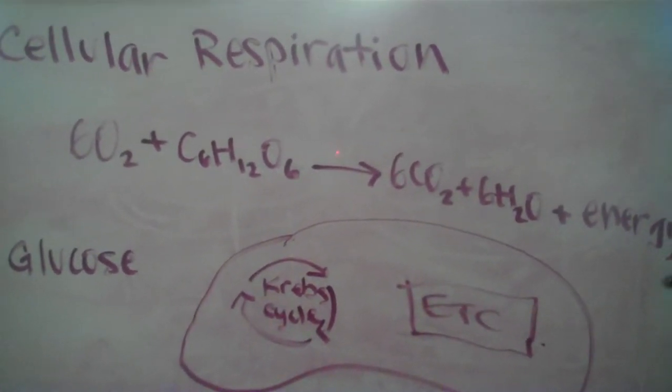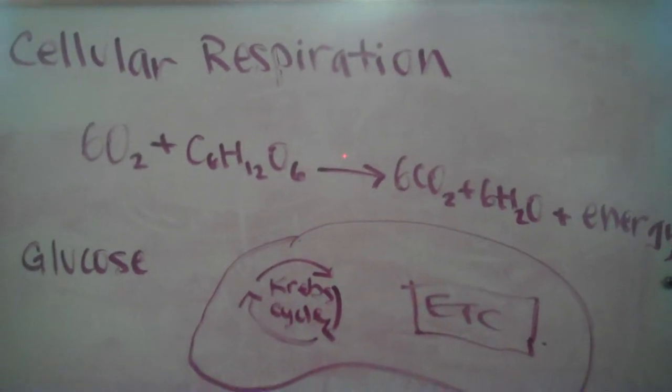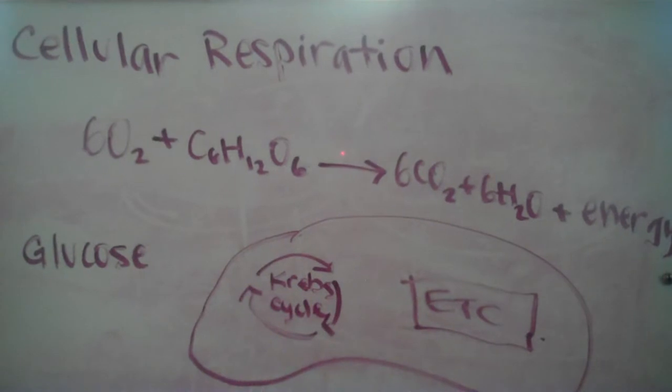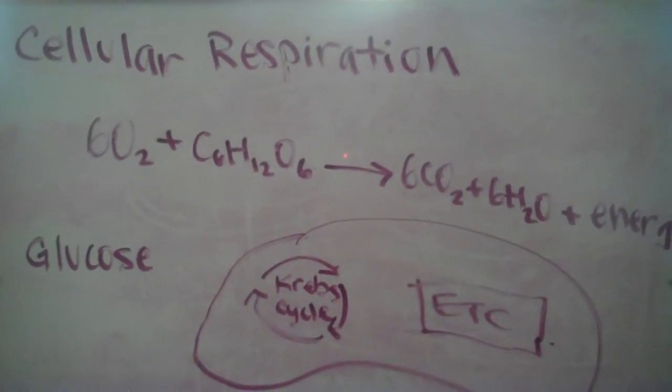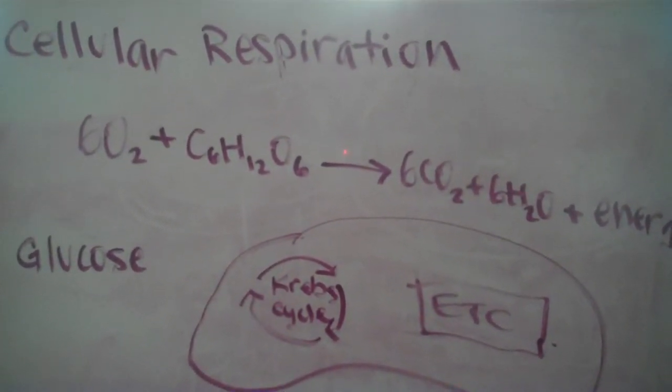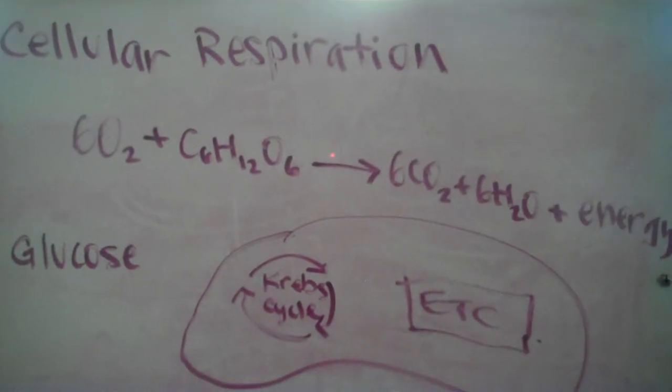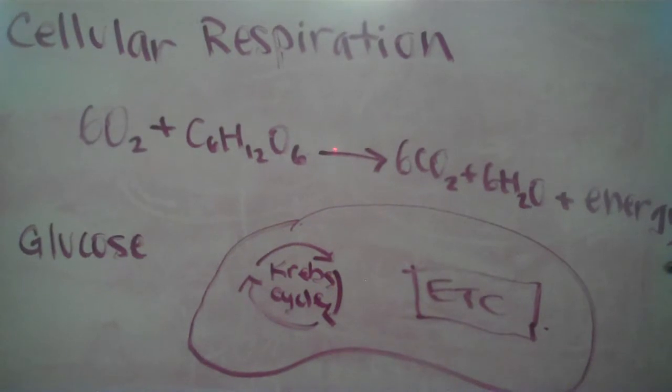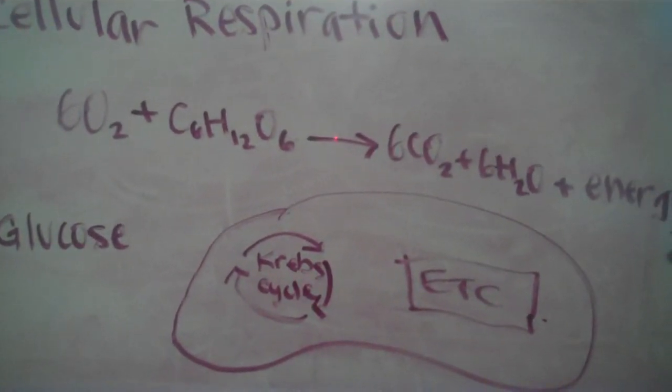One pyruvic acid molecule enters the mitochondria, and it is broken, or a CO2 is taken out, and then it is combined with coenzyme A to become acetyl CoA. Some energy converts NAD+ to NADH.